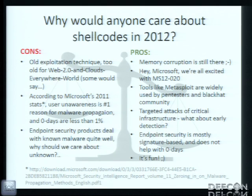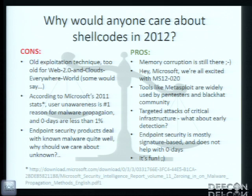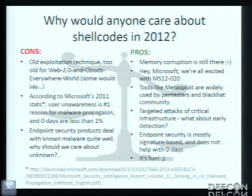But let's look at the other side of the coin. Memory corruption is still there. We still have a huge bunch of code written in C, programmers still making mistakes, still making vulnerabilities in their products. We remember the Microsoft report about vulnerability in remote desktop protocol. Tools like Metasploit framework are widely used by black-hat communities and pentesters. We shouldn't forget about targeted attacks on critical infrastructure such as planes, trains, and water pumps — it's really serious and can lead to human victims.